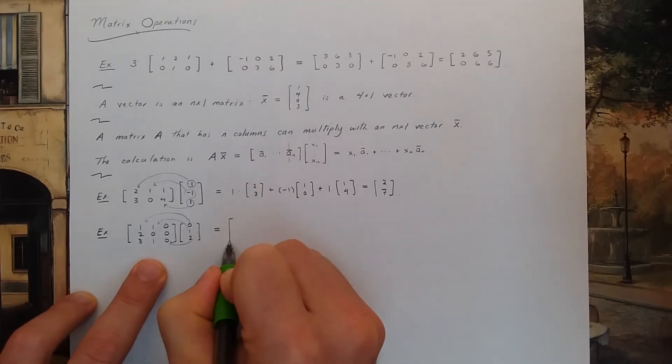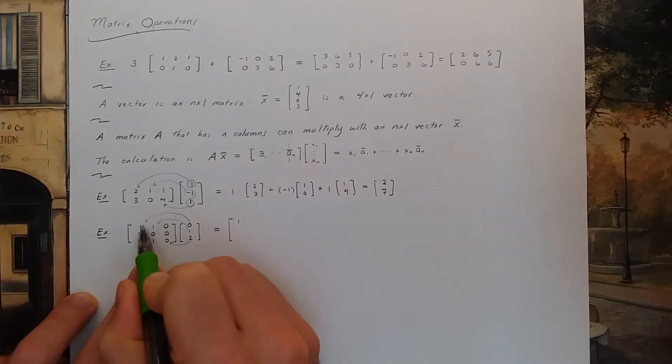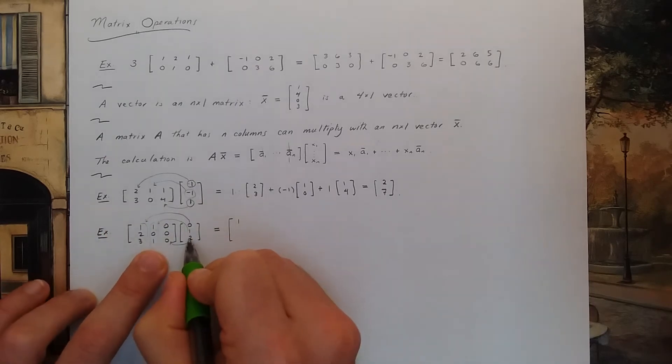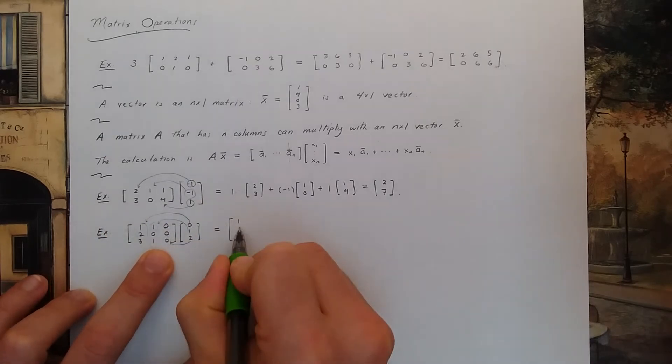So if you do that, I believe you get 0 of these guys. So you don't get anything in column 1. You get 1 of column 2, and 2 times this column of all zeros.